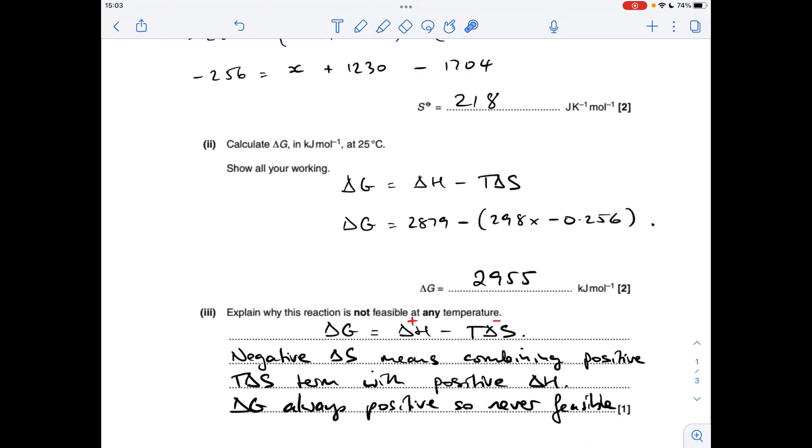Moving on to the next part, why is the reaction not feasible at any temperature? So the Gibbs equation's helpful here. I've reminded myself that delta H is positive, it's an endothermic reaction. The delta S was negative.